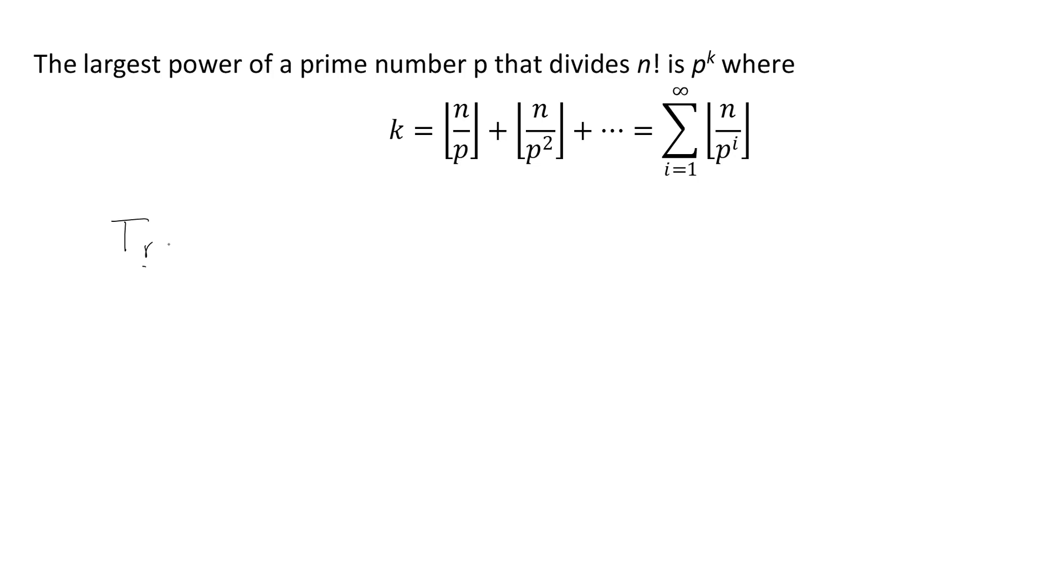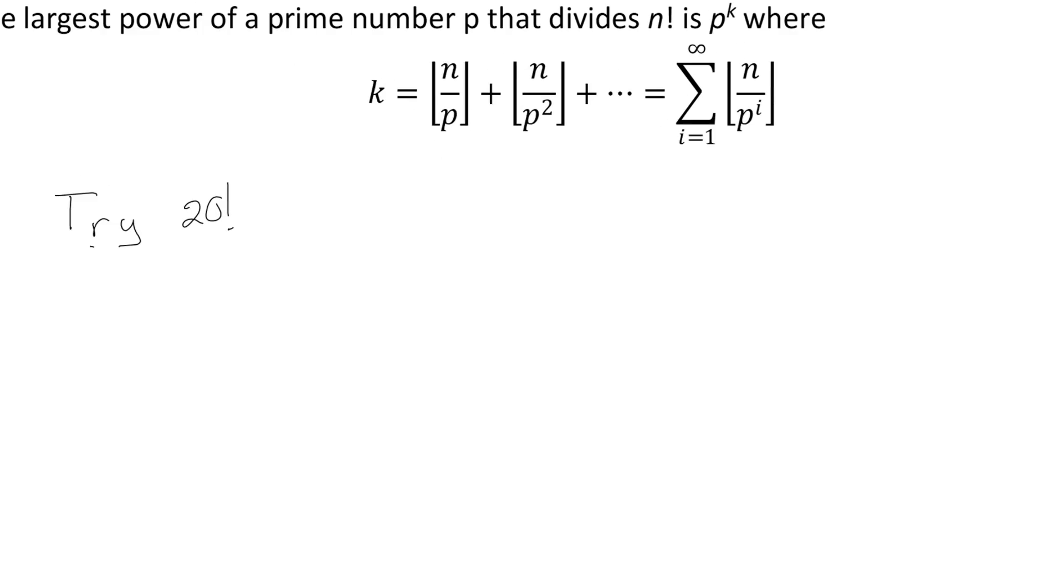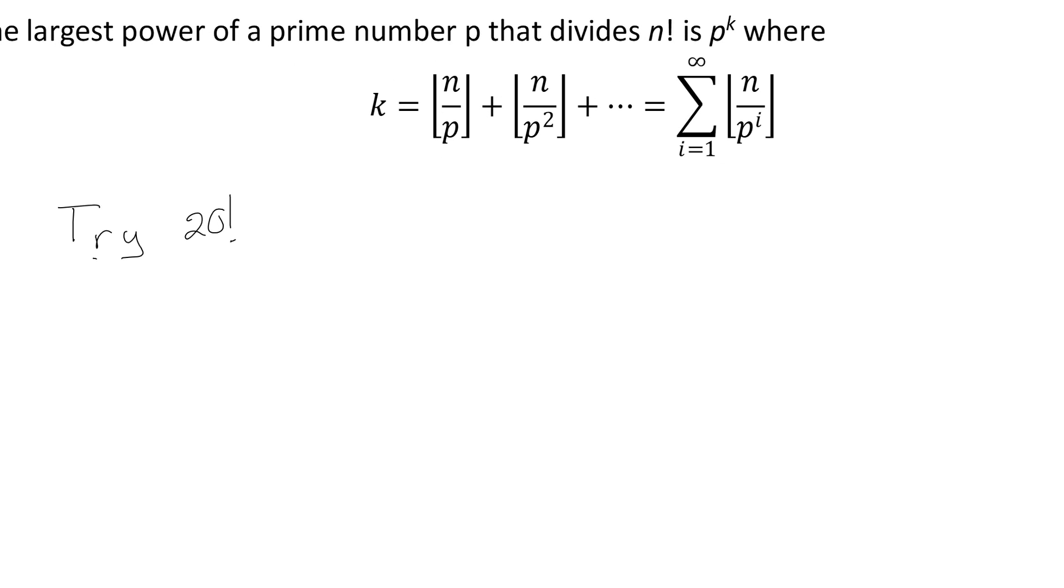So let's say I was going to try doing 20 factorial. The first question is if I was going to be factoring out 20 factorial, it's going to have a prime factorization of 2 to the something, 3 to the something, 5 to the something, probably at some point.